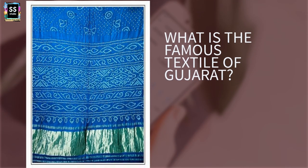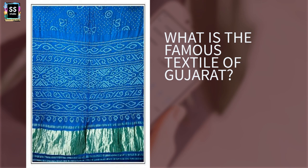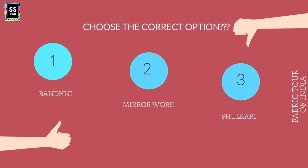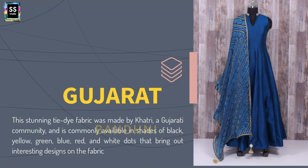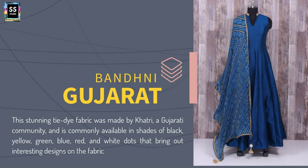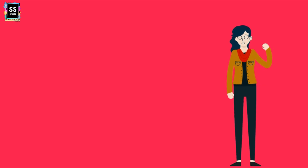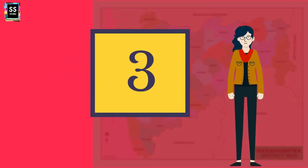State 2 on our list: Which is the famous textile of Gujarat? The options are: Is it Bandhani? Is it Mirror Work? Or is it Phulkari? You must be aware of this fabric from Gujarat — and of course it is Bandhani. This stunning tie-and-dye fabric was made by the Khatris, and features blue, green, and red dots all over the fabric. The history goes right back to the Indus Valley Civilization, where the dyeing process started around 4000 BC.